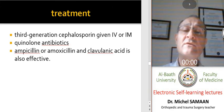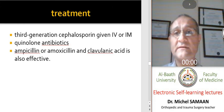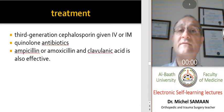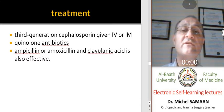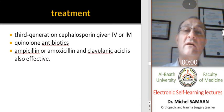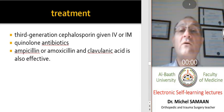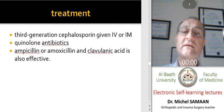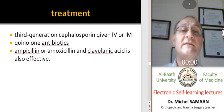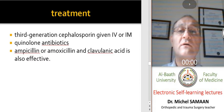Treatment of gonococcal arthritis is usually straightforward and responds well to antibiotics. We use third-generation cephalosporins intravenously or intramuscularly, or quinolone antibiotics. If chlamydia is suspected, we may use ampicillin, or amoxicillin with clavulanic acid.